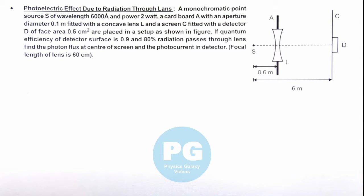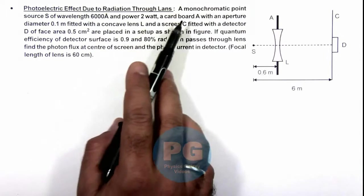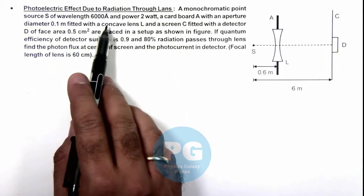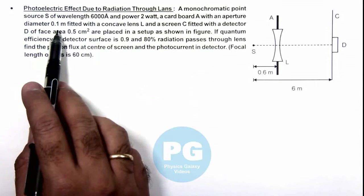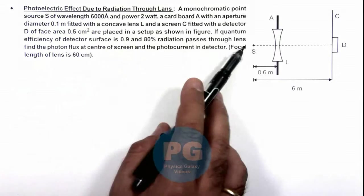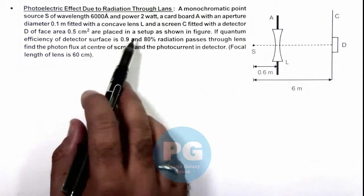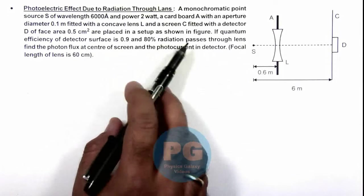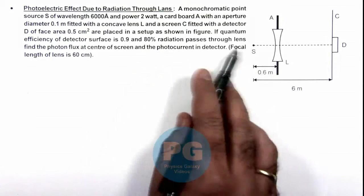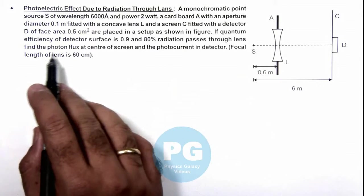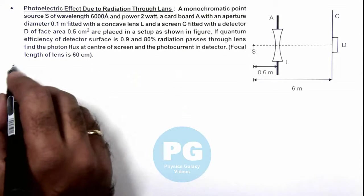In this illustration we'll be discussing the photoelectric effect due to radiation through a lens. We are given a monochromatic point source S of wavelength 6000 angstrom and power 2 watt. A cardboard A with an aperture of diameter 0.1 meter fitted with a concave lens L, and a screen C fitted with a detector D of face area 0.5 centimeter square are placed in a setup as shown in the figure. The quantum efficiency of the detector surface is 0.9 and 80 percent of radiation passes through the lens. We are required to find the photon flux at the center of the screen and the photo current in the detector. We are also given the focal length of the lens.